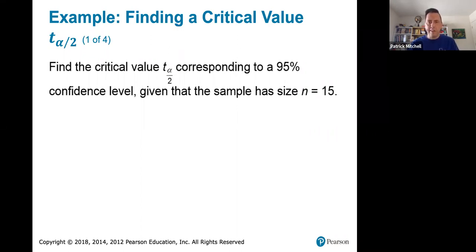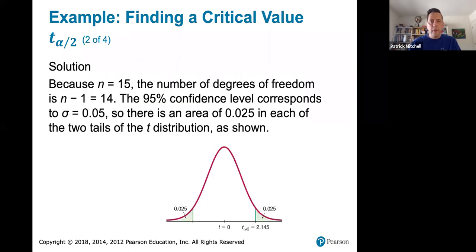So continuing with section 7-2, we've come to an example of finding a critical value T sub alpha over 2. They want me to find the critical value T sub alpha over 2 corresponding to a 95% confidence level, given that the sample has size n equals 15.